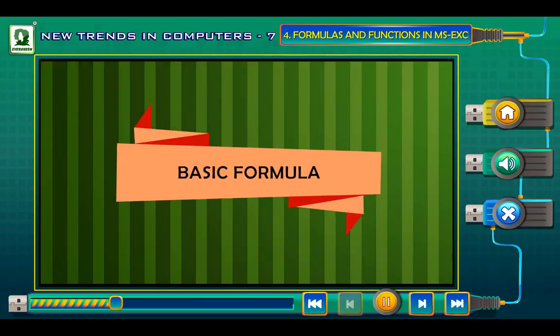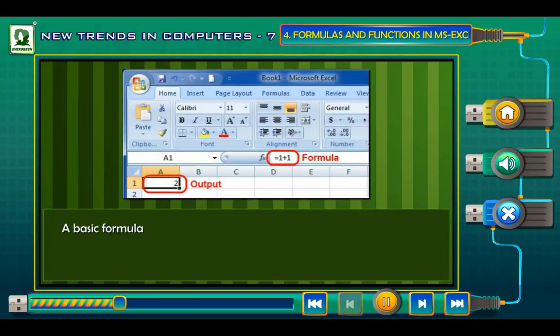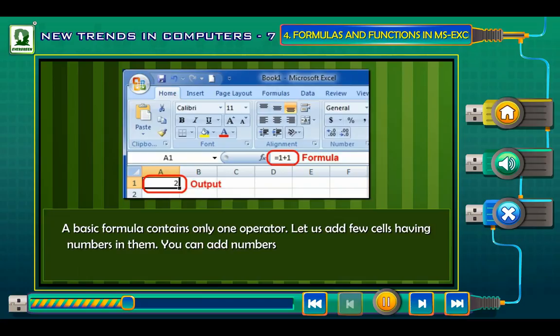A basic formula contains only one operator. Let us add a few cells having numbers in them. You can add numbers as you type them into a cell. For example, type =5+10 in a cell to display the result 15.